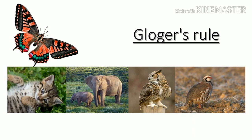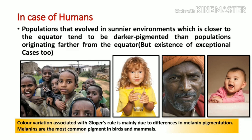There is a visual representation of Gloger's Rule showing pictures that support it. The organisms shown — whether cat, elephant, owl, or bird — are from warmer and humid conditions and therefore have darker pigmentation. In comparison, the same organisms from polar or cold areas have lighter pigmentation. For humans, populations that evolved in sunnier environments closer to the equator tend to be darker pigmented than those originating farther from the equator.